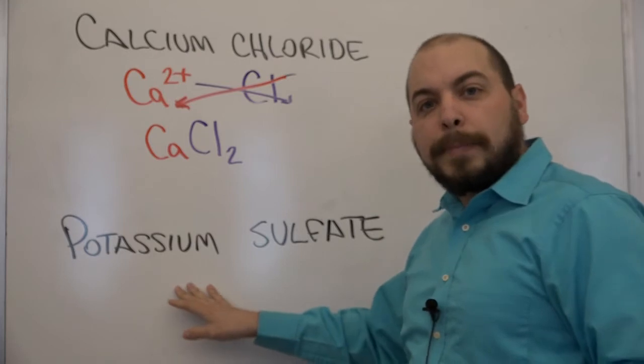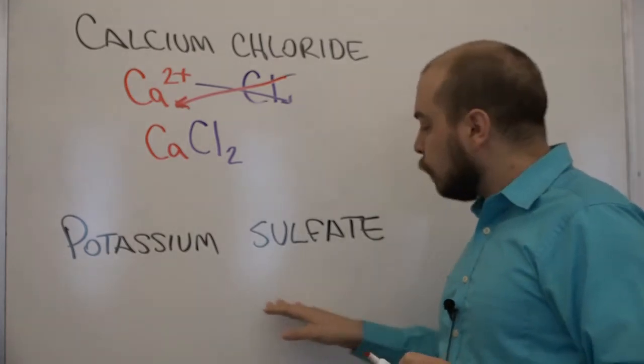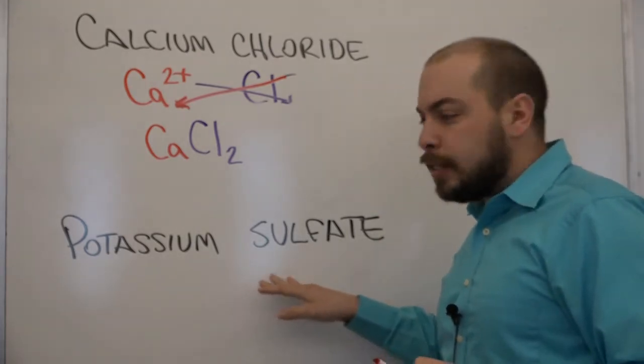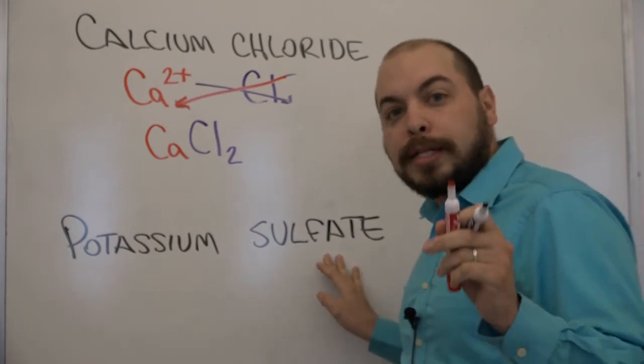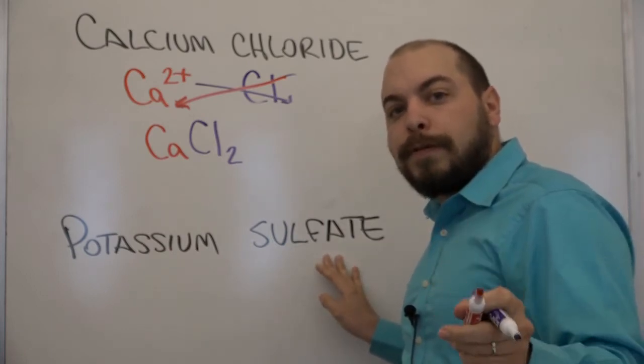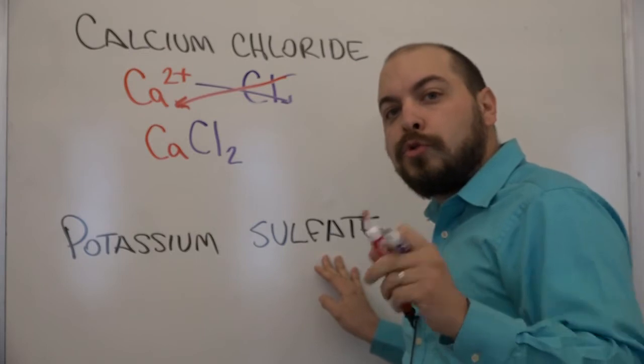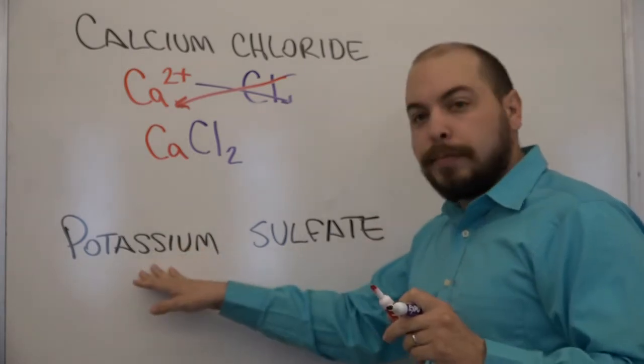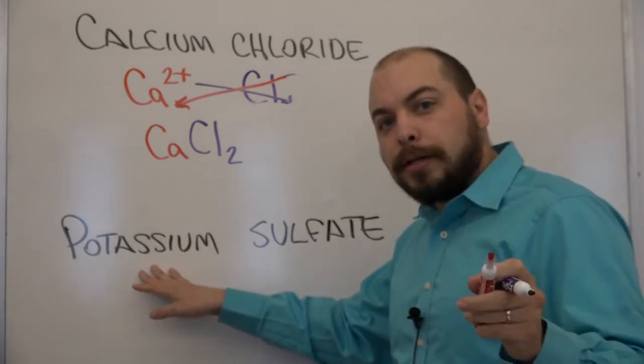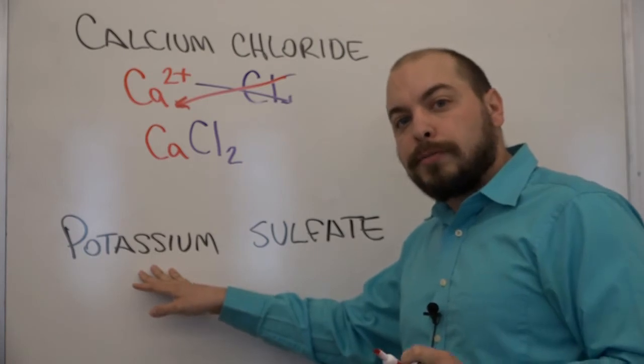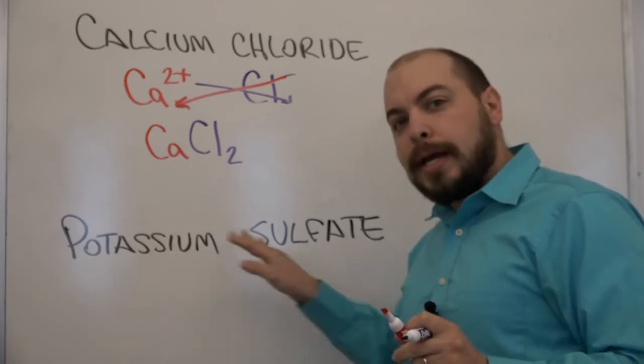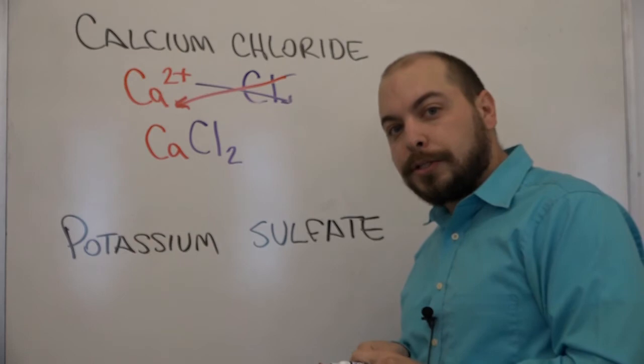Let's do the next one potassium sulfate. Now immediately you should recognize that sulfate is one of our polyatomic ions. Sulfate is SO4 2 minus. Potassium because it's an alkali metal is plus one charge. So we're going to write the potassium and the sulfate with their charges initially.